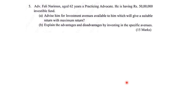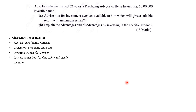Whenever you get a case study, divide it into 4 parts. Number 1: characteristics of the investor. Here we note down what the question is about — name: Fali Nariman, age 62 years, senior citizen; profession: practicing advocate; investable fund: 50 lakhs; and risk appetite: low. They prefer safety and steady income, suitable return with low risk.